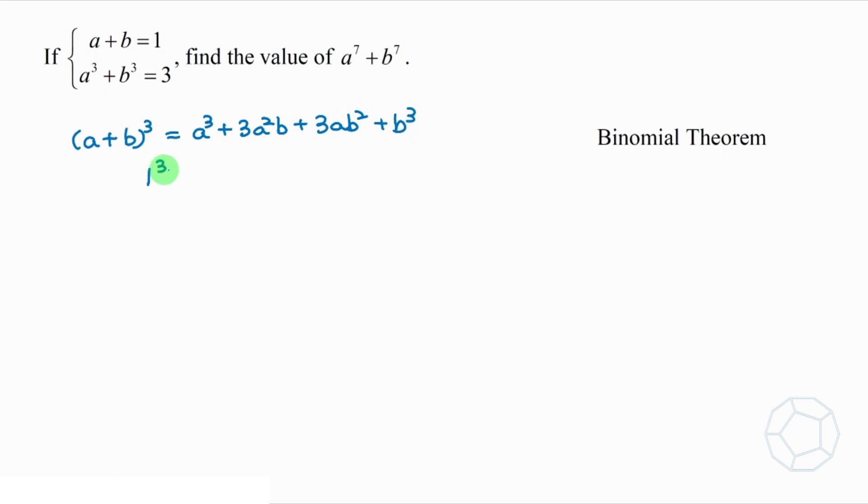And on the right hand side, we put a cube plus b cube is equal to 3. For the two terms 3a square b plus 3ab square, we take out the common factor 3ab to get bracket a plus b.